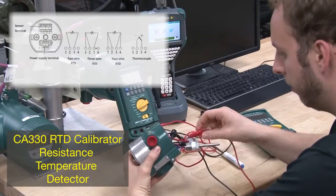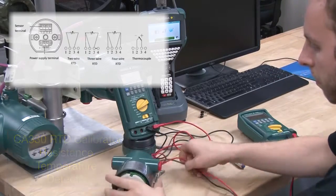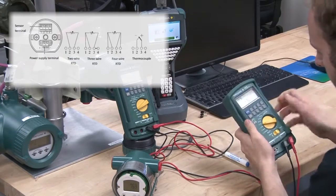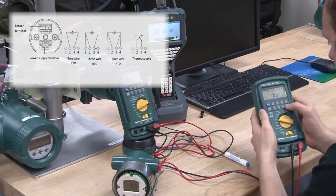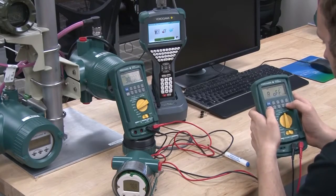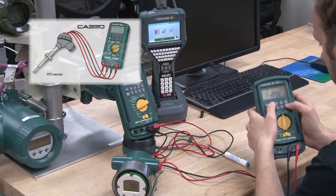The CA330 RTD calibrator or resistance temperature detector will correspond to 14 types of RTD standard for sourcing. It accepts 2, 3, and 4 wire and realizes RTD simulation. The CA330 also measures output of RTD sensors as a thermometer.